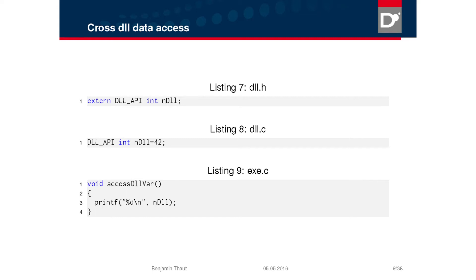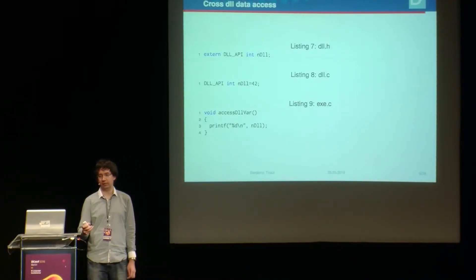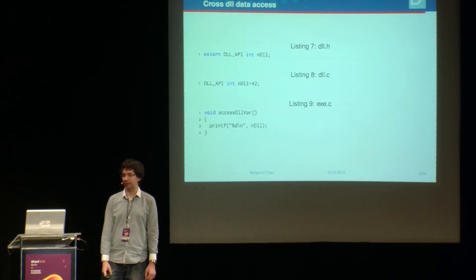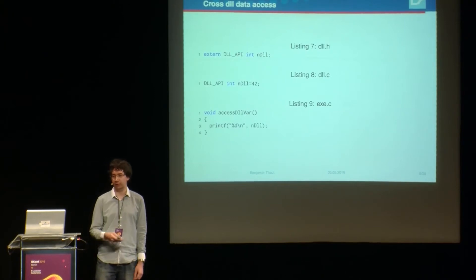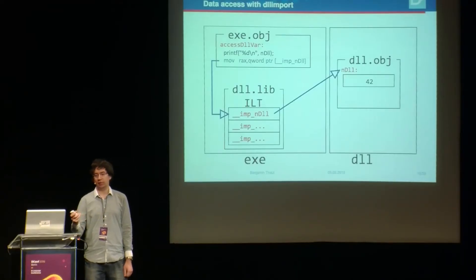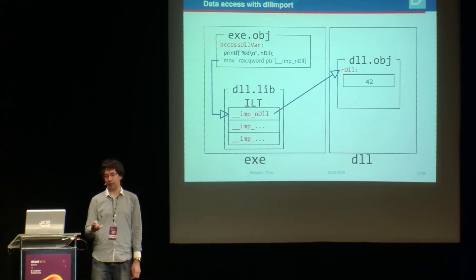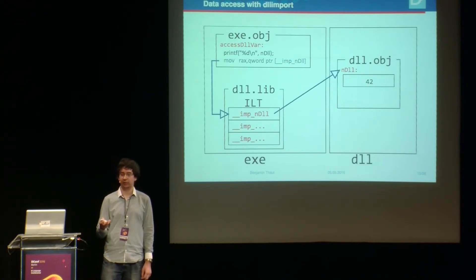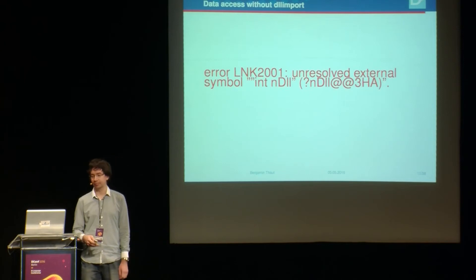But functions aren't everything — there's also data. For example, global variables. If you do that in C or C++, you declare a variable inside your DLL, declare it `extern` in the header, and access it in your executable. The assembly is similar to the function call case, but instead of `call` you use a `mov` to access the data — it first dereferences the import table entry, then reads the actual data inside the DLL. Again, one level of indirection.